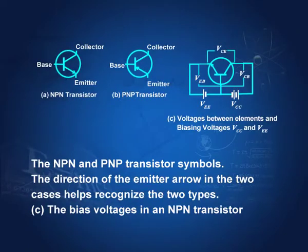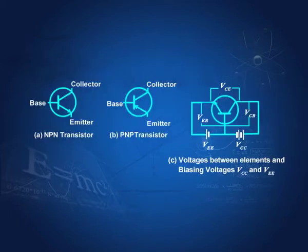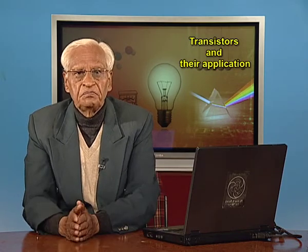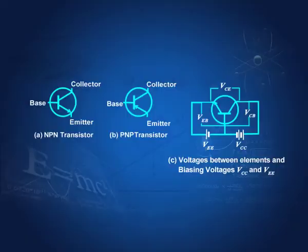The bias voltages between the various layers are shown here. V_eb is the voltage between the base and emitter, and V_ce is the voltage between emitter and collector. The battery in the collector circuit is denoted by V_cc, and in the base circuit by V_ee or V_bb depending on connections. The working of n-p-n and p-n-p is almost identical; the only change is that the polarities are reversed in the p-n-p case.